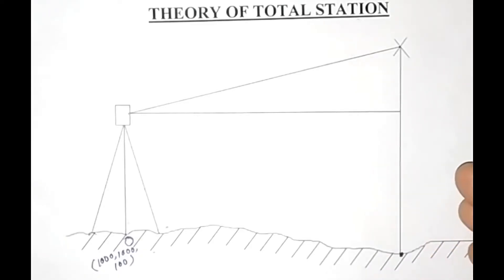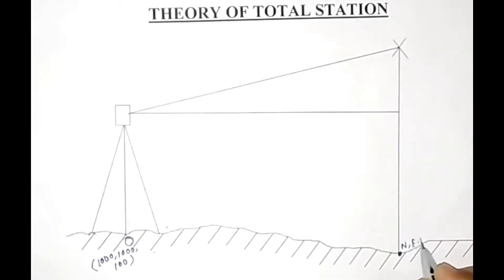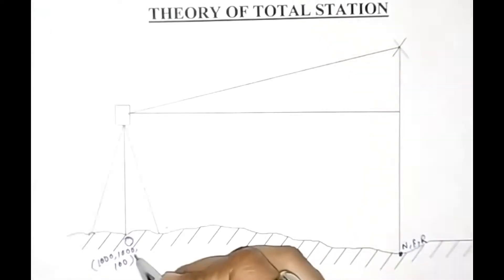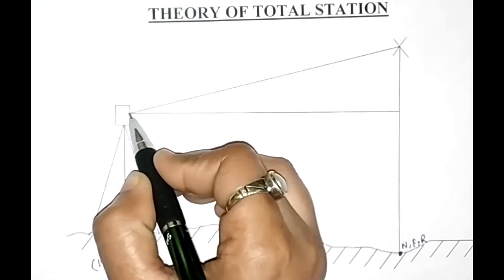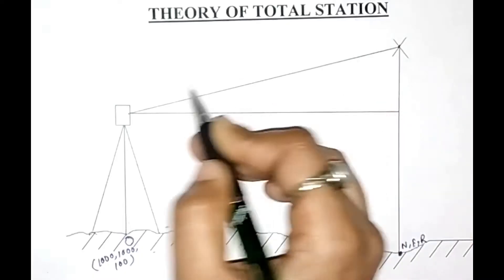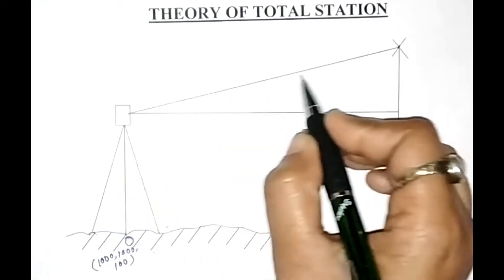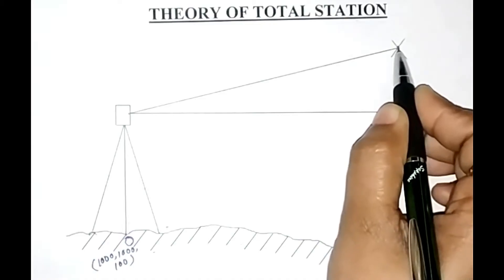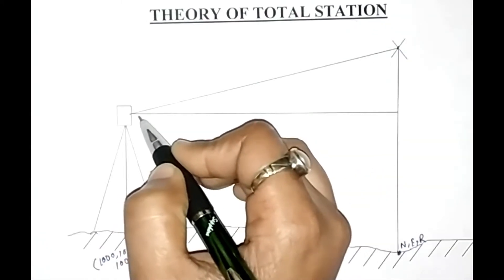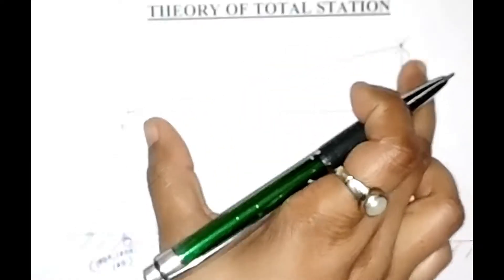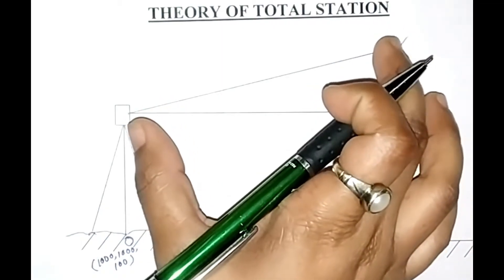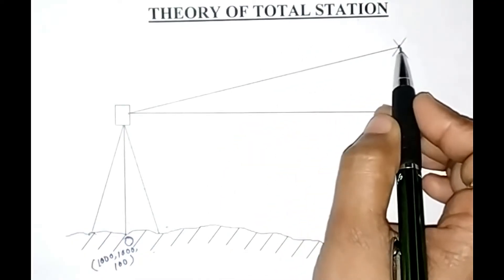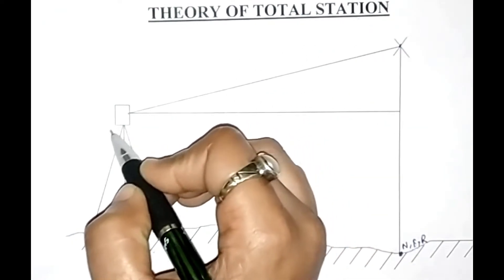In this video, we will understand how total station calculates the northing, easting, and elevation values of this unknown point with respect to these known coordinates. When we bisect the target, total station sends a ray to the target center and then it reflects back. Total station calculates the inclined distance by the help of time difference and speed of light of the same frequency generated from the instrument.